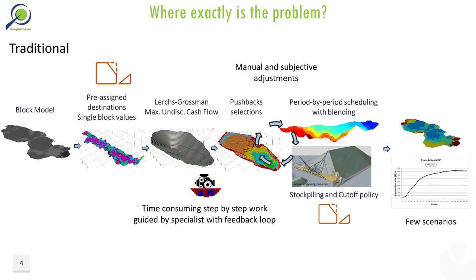In the traditional approach, it is necessary to define the cut-off grades, which fixes the block's destinations before the optimization. Then the Lerch-Grossman algorithm, published in the 1960s, is executed, producing a series of nested pits from factors applied on the metal sales prices, which guide the expansions of the pit. The specialists must then select from the resulting pits a subset to compose the mining phases, which are manipulated to better comply with the geometric constraints.